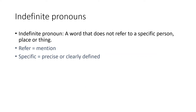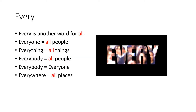Today's grammar lesson is about indefinite pronouns. The indefinite pronoun is a word that does not refer to a specific person, place, or thing. Indefinite pronouns are used to refer to a non-specific person, place, or thing.